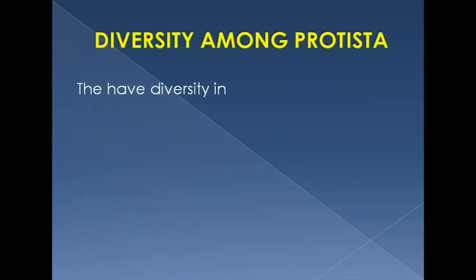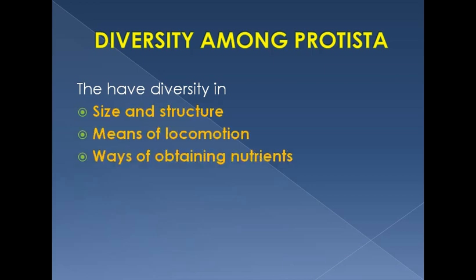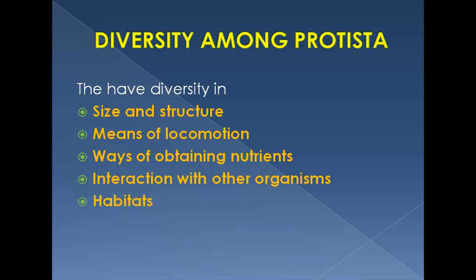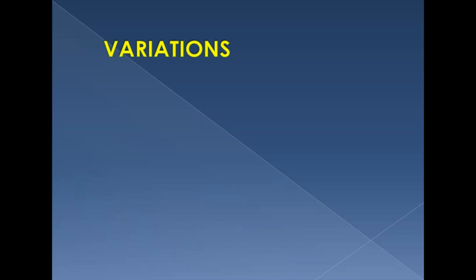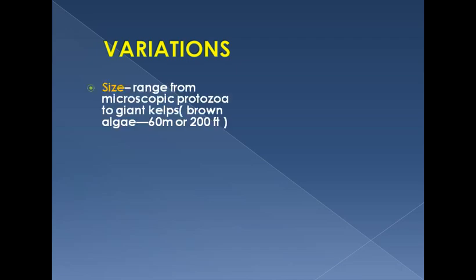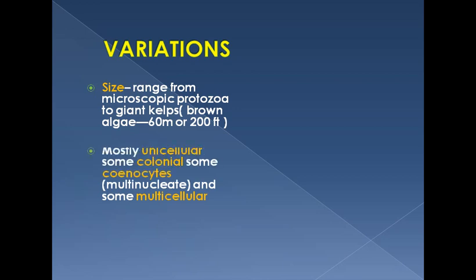There is great diversity among protists in size and structure, means of locomotion, ways of obtaining nutrients, interaction with other organisms, habitats, and modes of reproduction. Variations in size mean that they range from microscopic protozoa to giant kelps — brown algae which are 60 meters or 200 feet long.